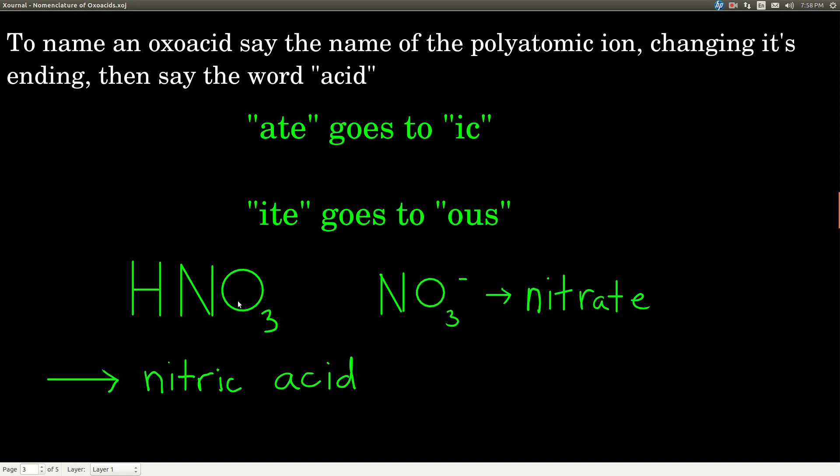So again, it starts with hydrogen. That's an acid. Look at the rest of the molecule. If it's a polyatomic ion that contains oxygen, then it's an oxoacid. So find the name of that polyatomic ion. And it will end in either ate or ite. Change ate to ic, ite to ous. Say that, and then say the word acid, and you're done. All there is to it.